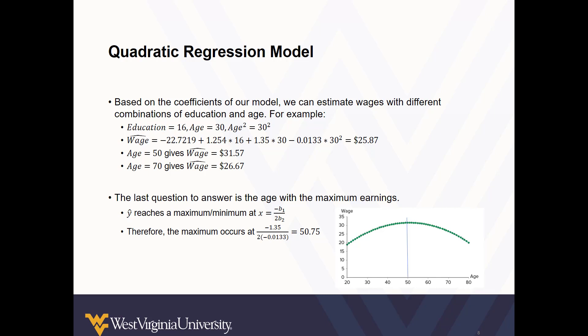Then the last question we had to answer was, what age do we have the maximum earnings? To do this, we employ that equation I mentioned earlier and plug in the coefficients we now have for b₁ and b₂. I've also included a visual of the shape of the curve so you can really see that maximum point.